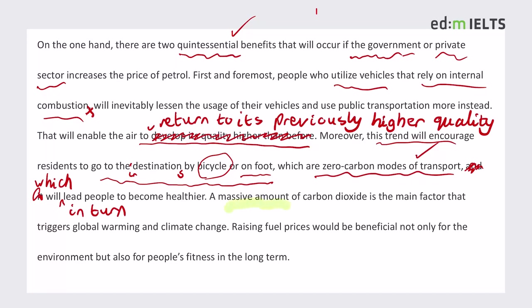A massive amount of carbon dioxide is the main factor that triggers global warming and climate change — they're kind of the same thing, but we tend to use 'climate change' these days. Language changes over time; when I was young we said 'global warming,' now we say 'climate change.' The reason is quite funny — people thought getting warmer sounded like a nice thing, so they wanted to make it sound more serious. 'Raising fuel prices would be beneficial not only for the environment, but also for people's fitness in the long term.' It's explained quite clearly — if people ride a bike or travel on foot, it's good for their health. Using 'not only... but also' is a nice way to show off grammatical range.